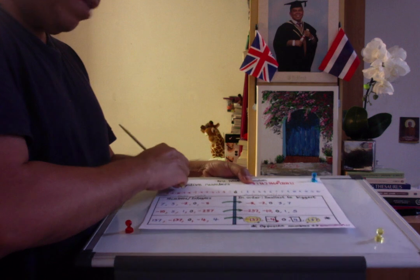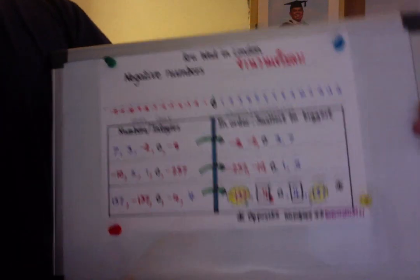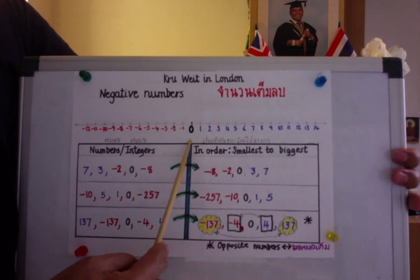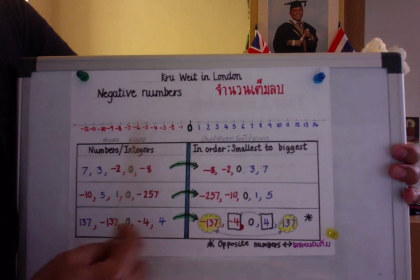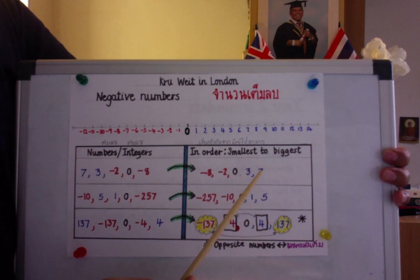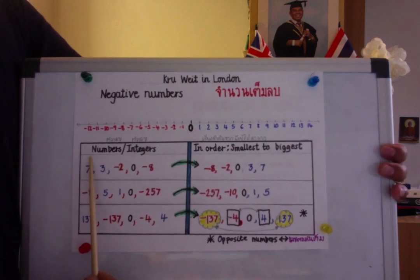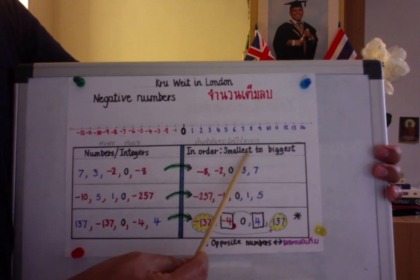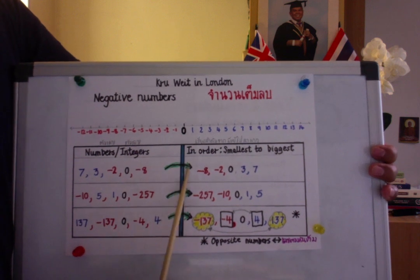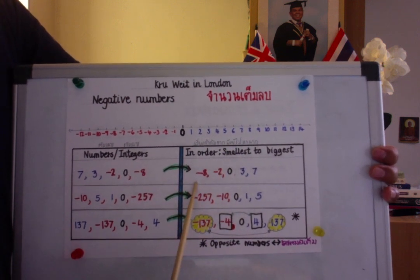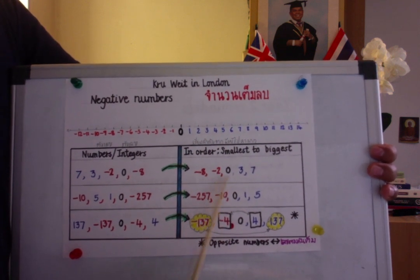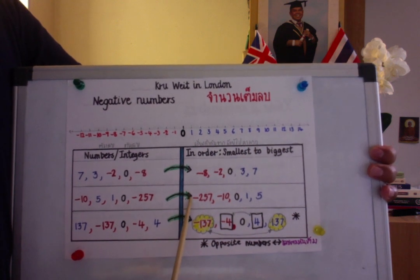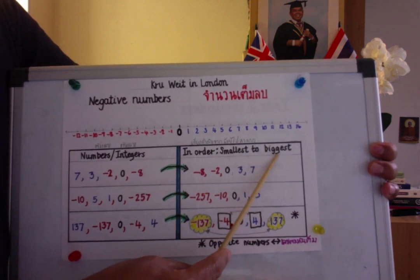Next, I want to emphasize: when learning about negative numbers, I recommend everyone use the number line to help when you calculate or think about the value of numbers. To the left, getting smaller; to the right, getting bigger or greater than zero. I put the numbers 7, 3, negative 2, 0, and 8 — then I want you to put them in order from the smallest to the biggest. Rearranging from the smallest, you get: negative 8, negative 2, 0, 3, and 7.